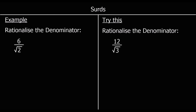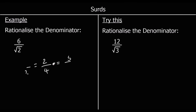This question says 6 over root 2. I want to get rid of the surd from the bottom of the fraction and I can do that by multiplying the top and bottom of the fraction by the same thing. For example, if I had one half and I multiply top and bottom by 2, I'll get 2 quarters — that's the same as a half. If I multiply by 5, I'll get 5 tenths — still the same as a half. So when you multiply the top and bottom by the same thing, the fraction stays equivalent.